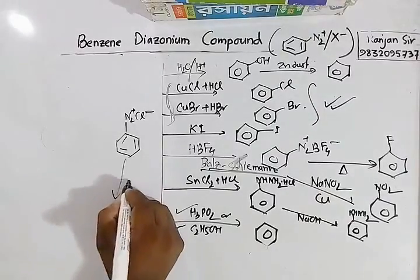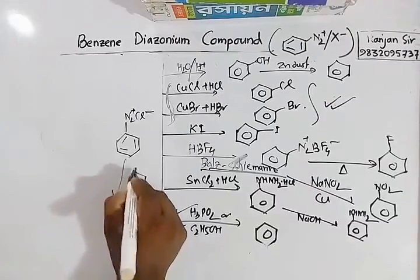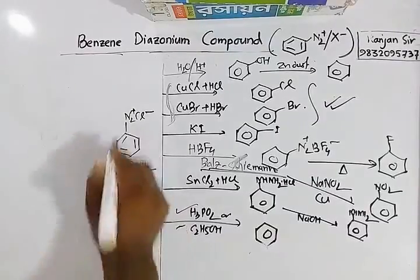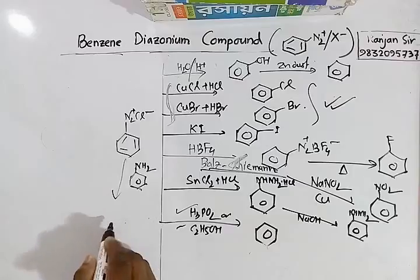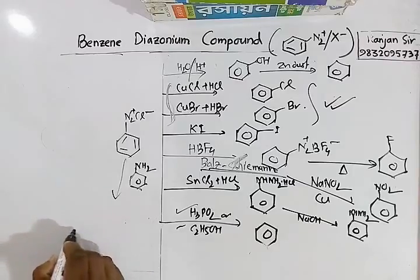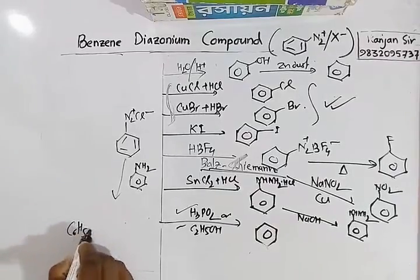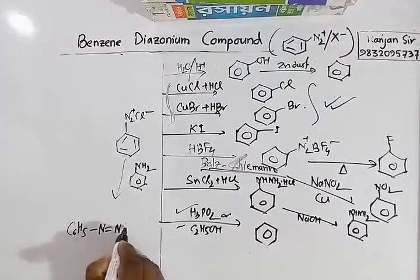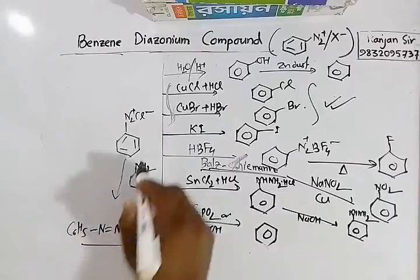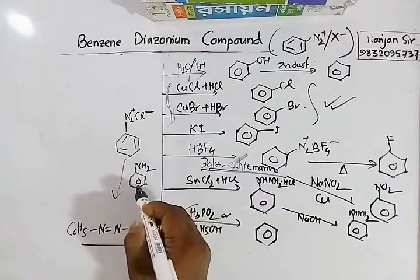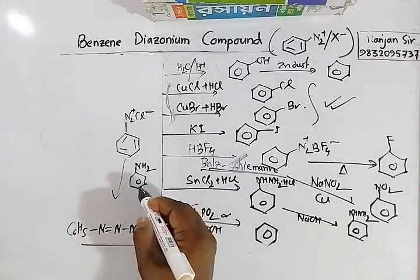Benzene diazonium chloride in the presence of aniline will react and add up to form diazoaminobenzene: C6H5-N=N-NH-C6H5.